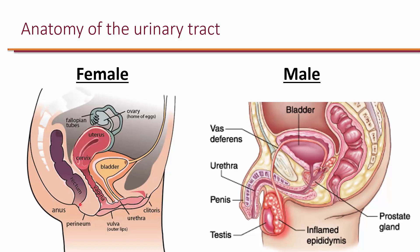Because the urethra is close to the rectum in females, gastrointestinal organisms can easily translocate to the urethra and then ascend to the bladder, making cystitis much more common in females compared to males. In males, the opening of the urethra is much further from the rectum, making it more difficult for bacterial translocation and for bacteria to travel up the urethra.